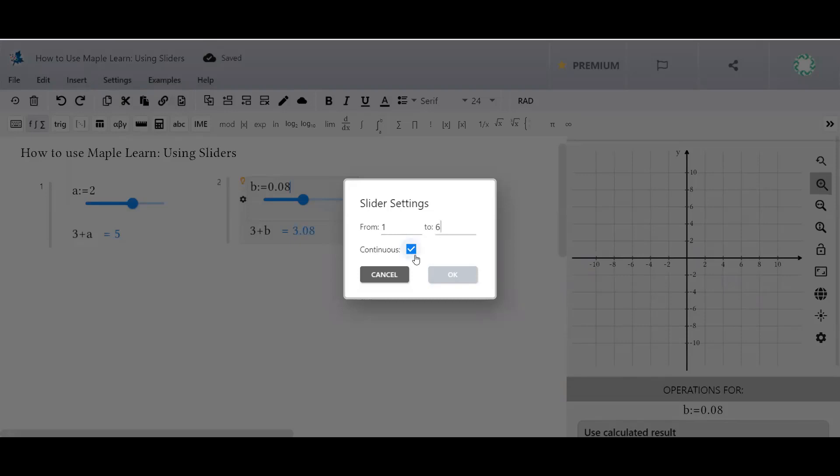The Continuous button specifies that this slider can take non-integer values. Uncheck it if you only want integers.